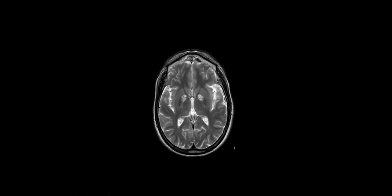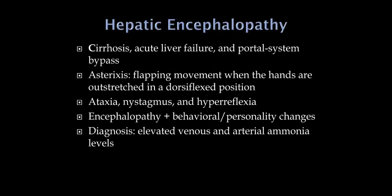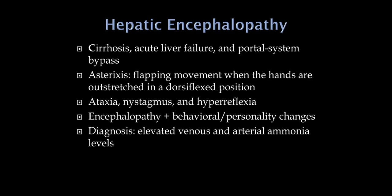Hepatic encephalopathy is unique as a metabolic cause because we often have cerebral edema in the cortical area. These are patients with cirrhosis or acute liver failure where ammonia accumulation leads to confusion. The classic exam finding is asterixis — have the patient hold arms out with dorsiflexed wrists and you get a dramatic flapping movement. They can also have ataxia, nystagmus, hyperreflexia, and frequent psychiatric manifestations like personality change and anxiety. Arterial ammonia level is the better test.